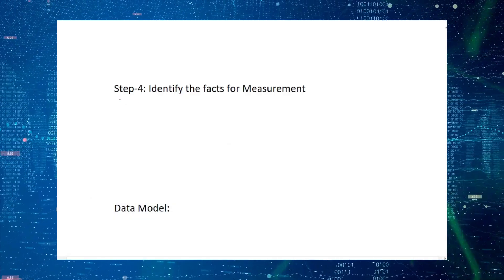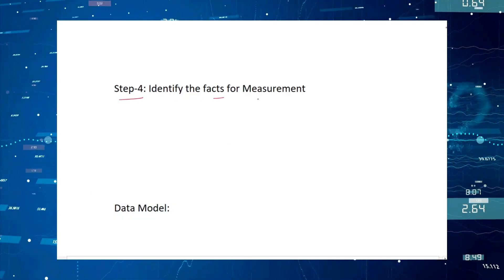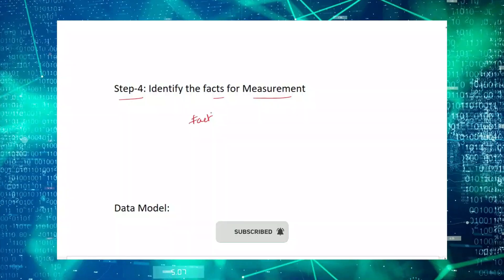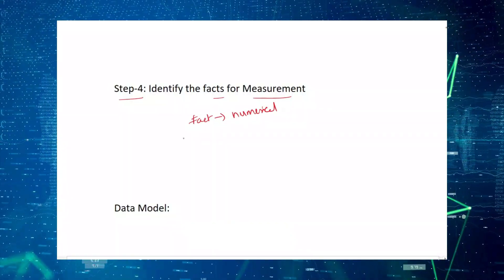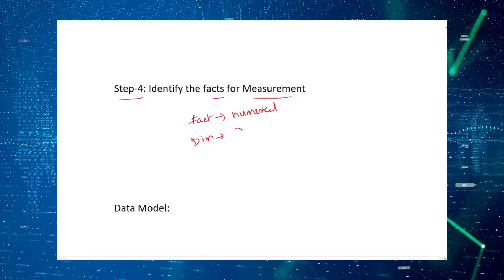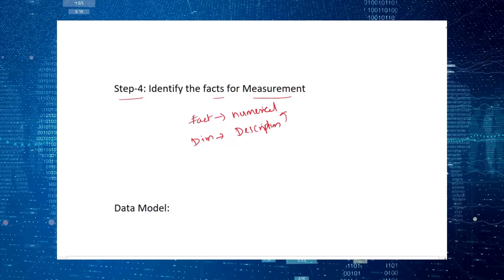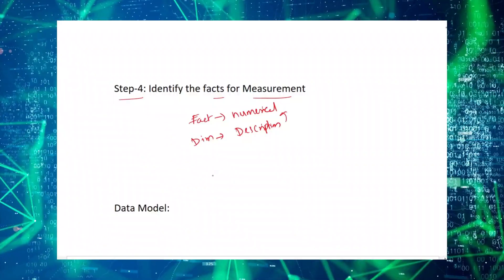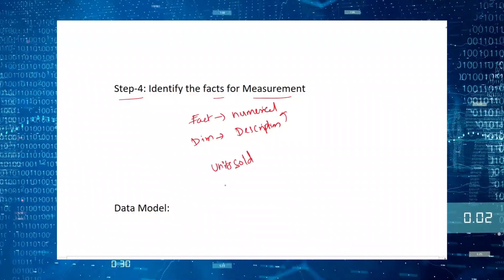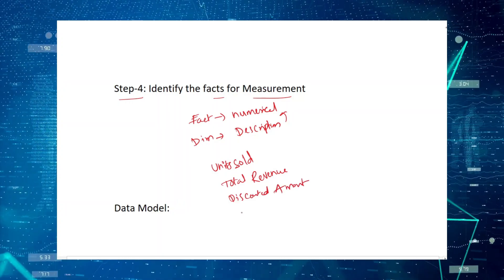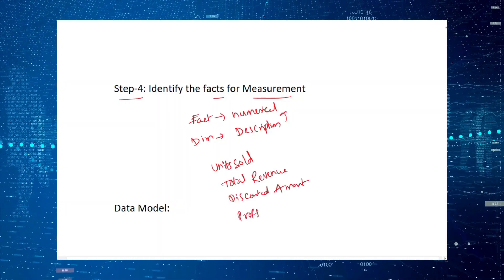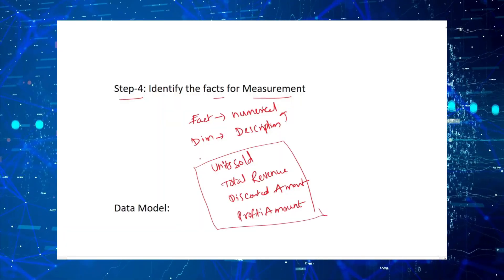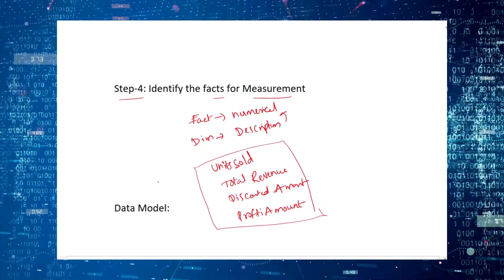Step four is identifying the facts for measurement — what are the numerical values you want to measure? The fact table contains only numerical or measurable data, while dimension tables contain descriptions about that data. In this example, the measurements include units sold, total revenue, discounted amount, and profit amount — the total profit on a transaction. These are the measurement facts to add to the fact table.